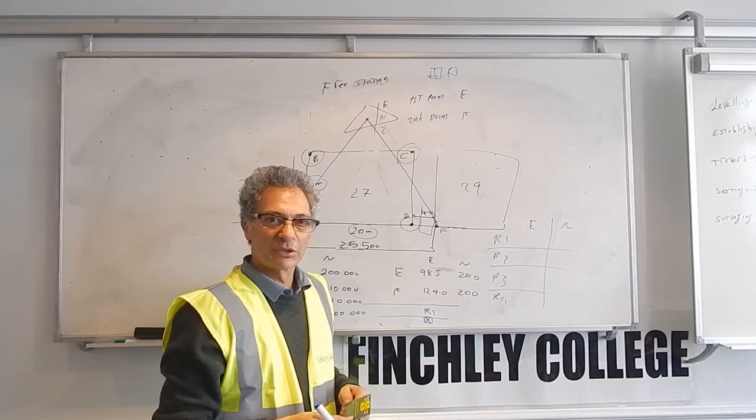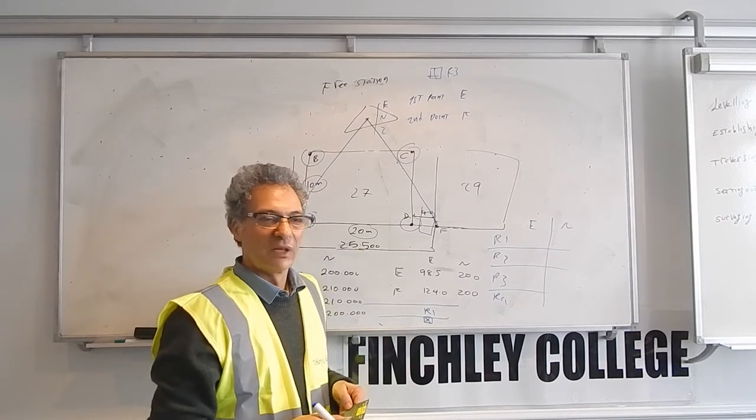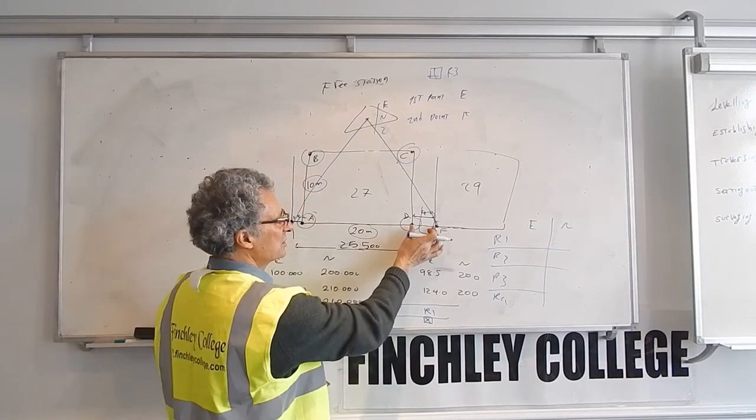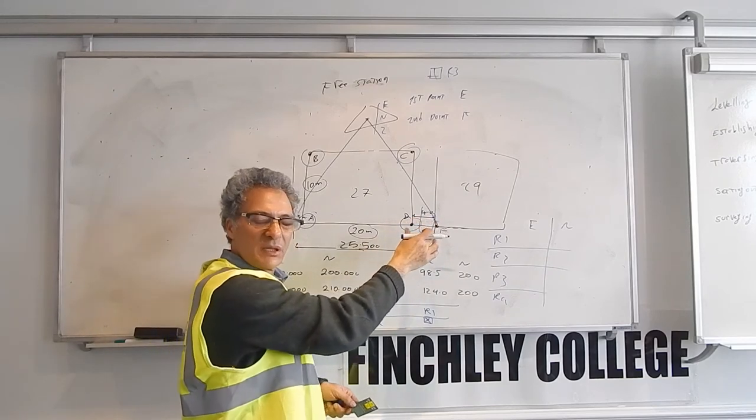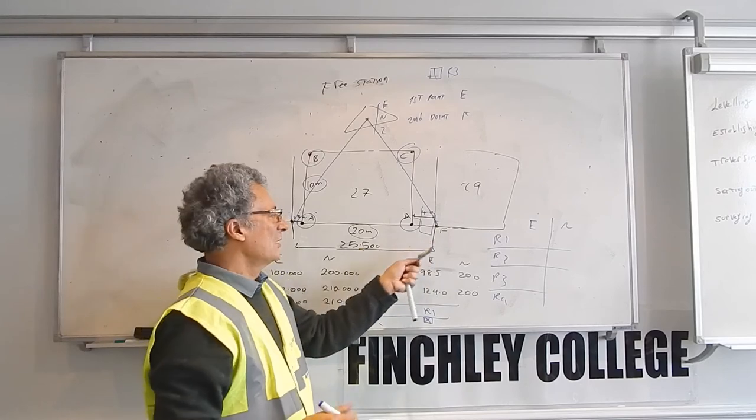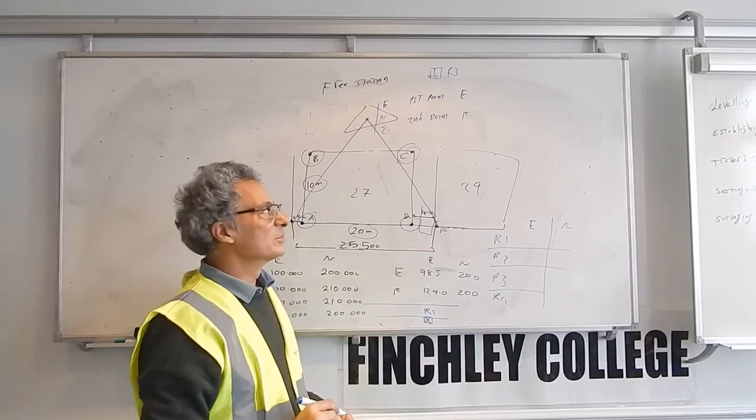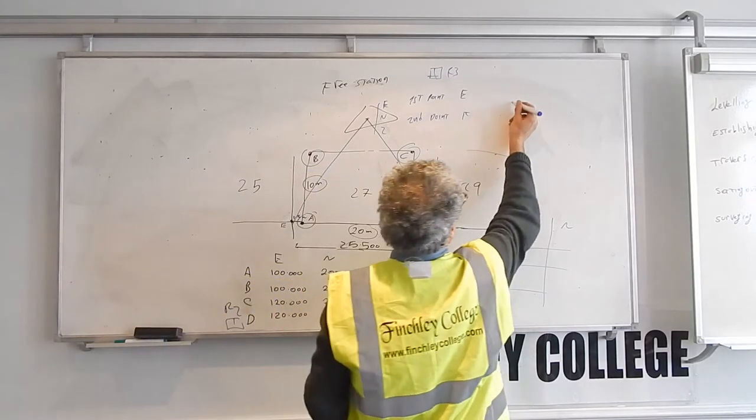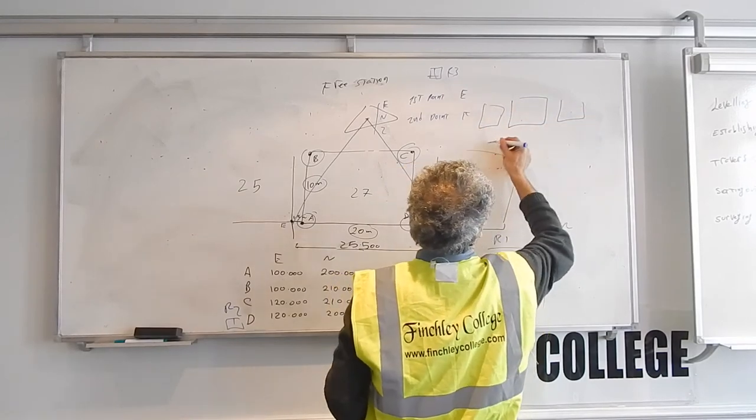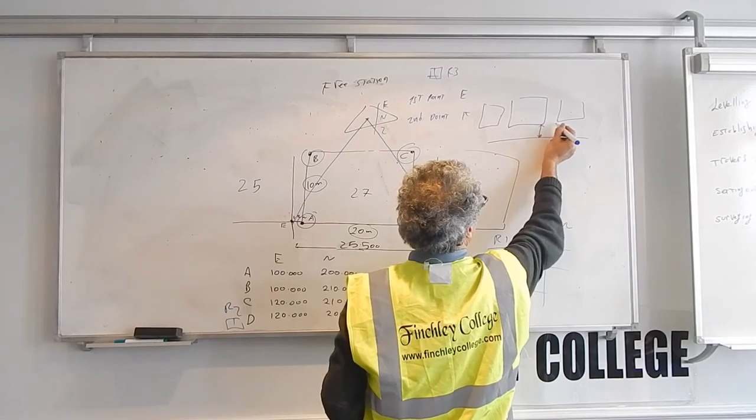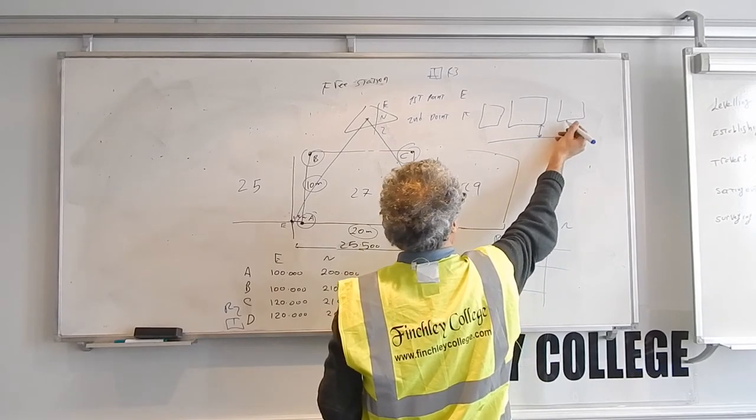So that's how you establish control on small sites, where you have information, initial information. What you need is from the architect to tell you how far you are from the next door building or from the road or from the curb. So for example, your building is here, the adjacent properties are here, and you have a road.